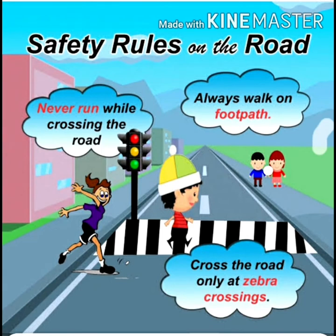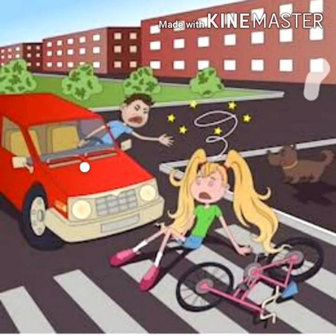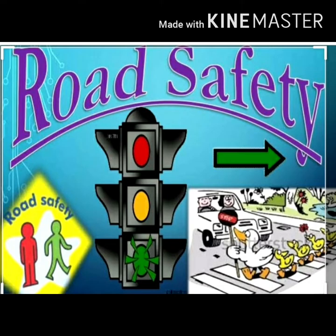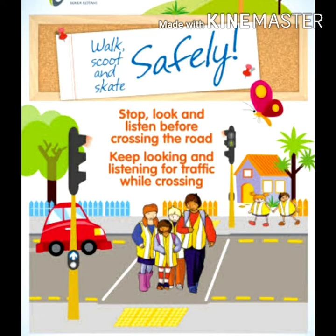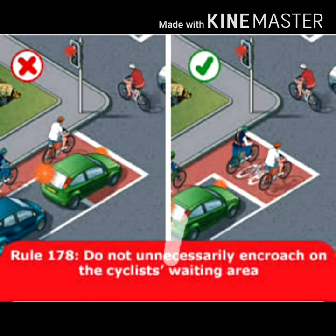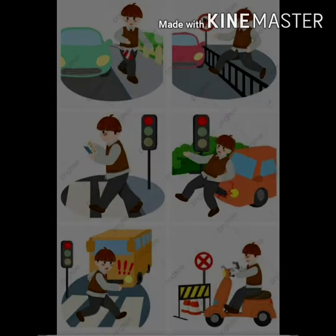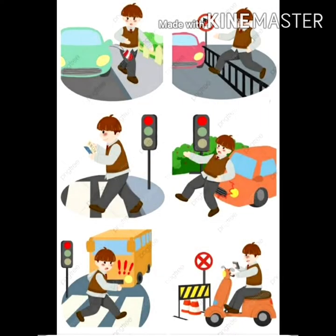Children, whenever we are on the road, we should follow some safety rules. Otherwise, it can lead to accidents. Traffic lights and traffic signs are the signaling devices that help us and give us information and directions on how we should behave on the road so that we are safe and accidents can be prevented.